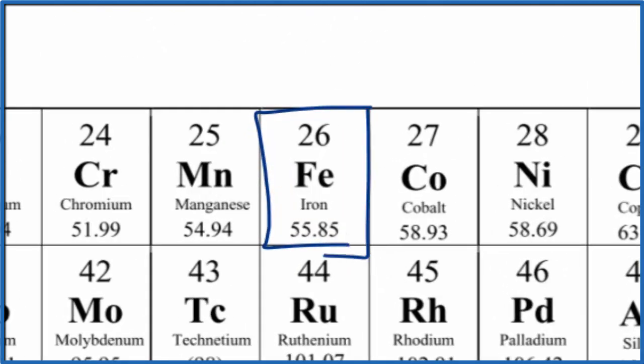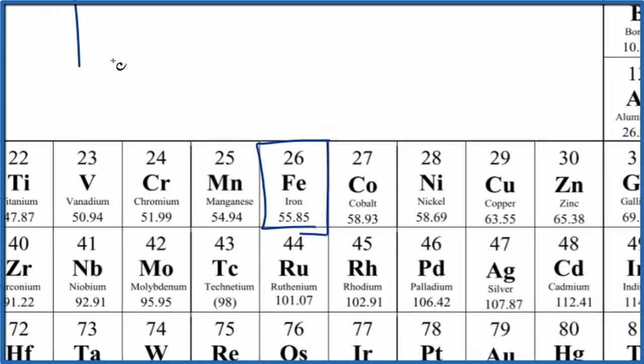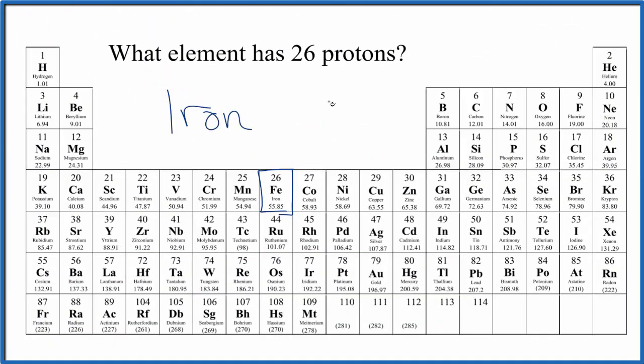Element 26, that's iron. So in answer to our question, iron, the element symbol Fe, has 26 protons.